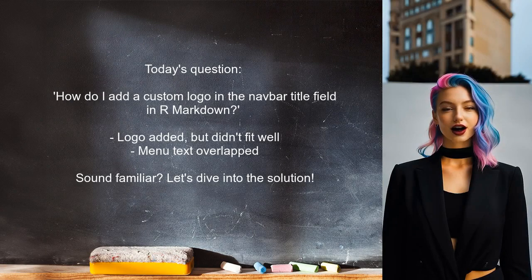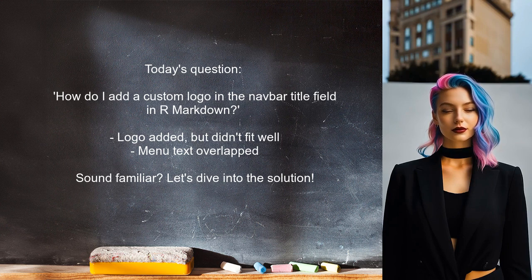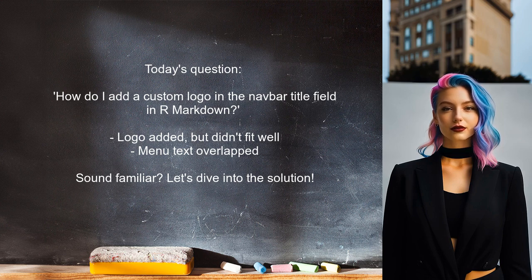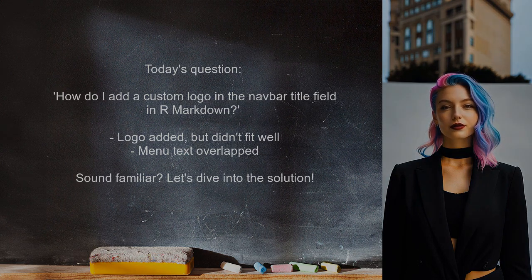Here's the specific question we're addressing today. One user asked: how do I add a custom logo in the navbar title field in R Markdown? They mentioned that while they managed to add the logo, it didn't fit well and the menu text overlapped. Sound familiar? Let's dive into the solution.